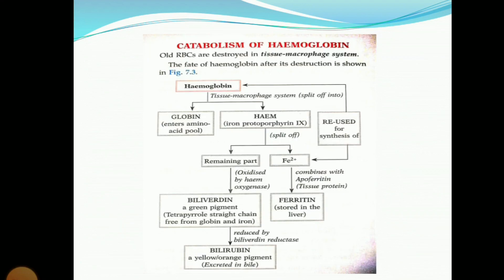Next, the heme splits off into iron (Fe²⁺) and the remaining part, which is oxidized into biliverdin. Further, it is reduced to bilirubin. The main discussion of bilirubin will be found in the context of jaundice.